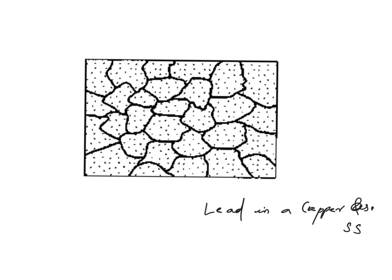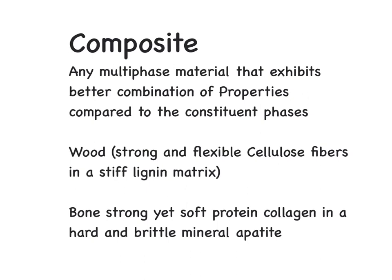Now let's start talking about composites and identify what the key differences are. Broadly speaking, a composite is any multi-phase material that exhibits a better combination of properties compared to its constituent phases. But the key difference is there is no restriction that one phase should be a metal. You have metal matrix composites, polymer matrix composites, and many natural composites — for example, wood is a good example of a natural composite.